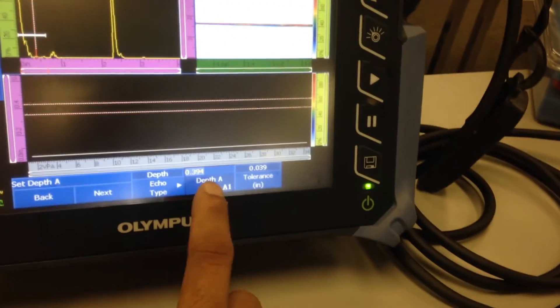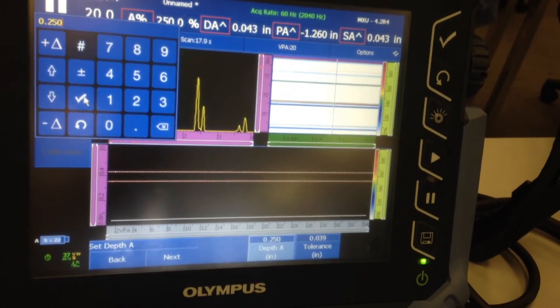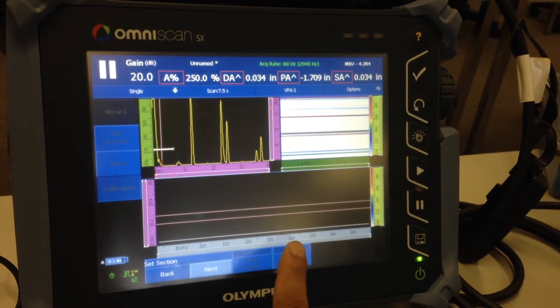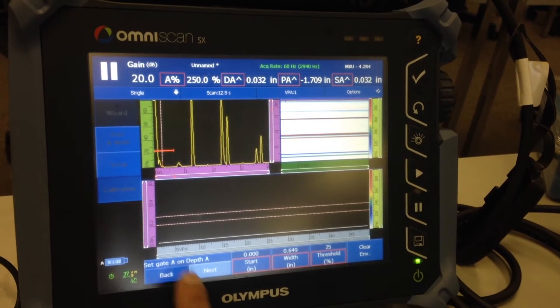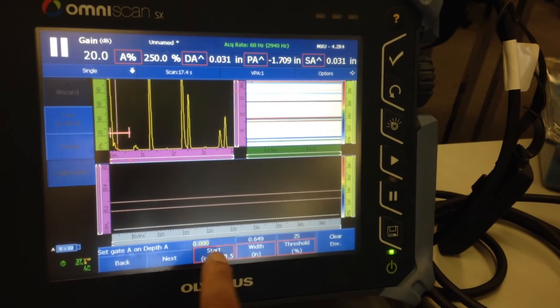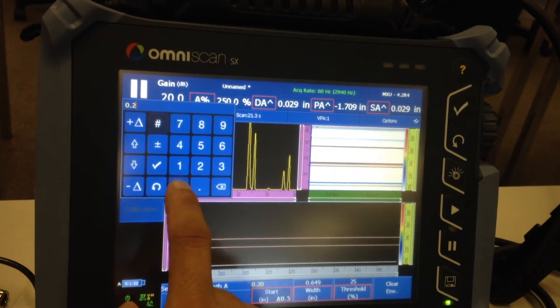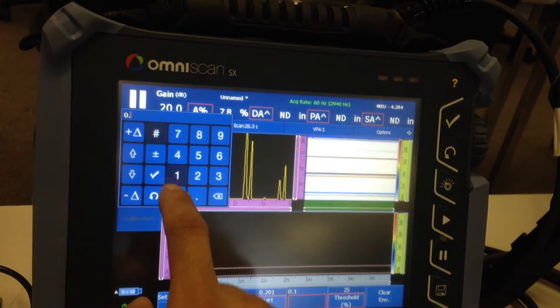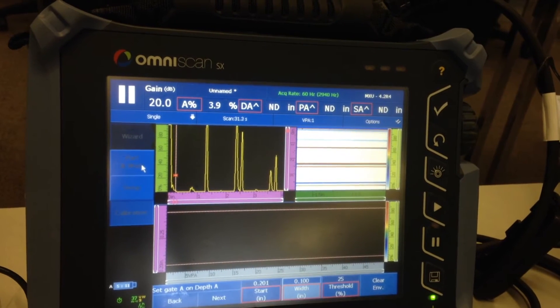In this case I'm getting a signal off of the quarter-inch side drill hole, so my echo type is depth and the depth is quarter inch. Click next, first one, last 49, click next. Set gate A on depth A.